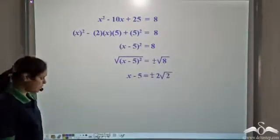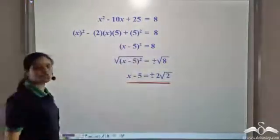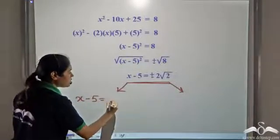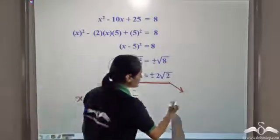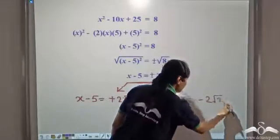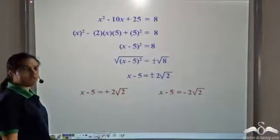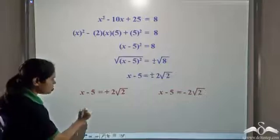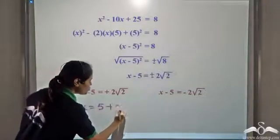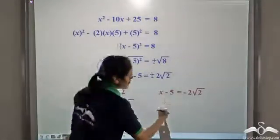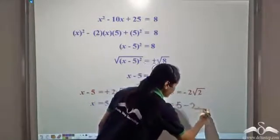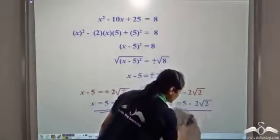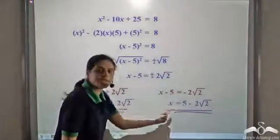So we have x − 5 = ±2√2, which gives rise to two equations: x − 5 = +2√2 and x − 5 = −2√2. Solving these, we get x = 5 + 2√2 and x = 5 − 2√2. These are the two solutions.